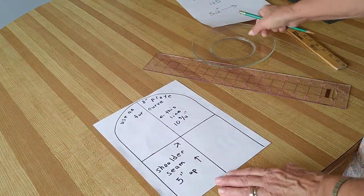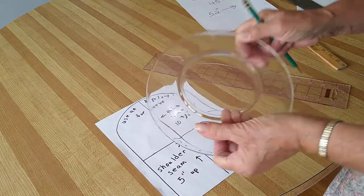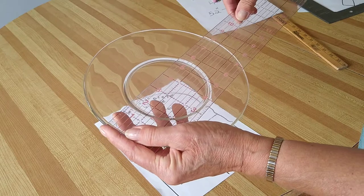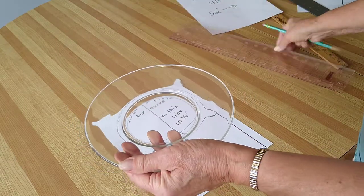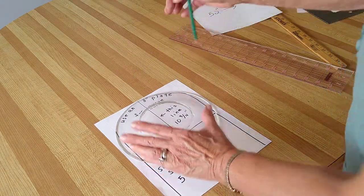This line here will be ten and three quarter inches long. Now you're going to take a plate, eight inch plate. Measure from side to side, eight inches. Place it down and draw the curve.